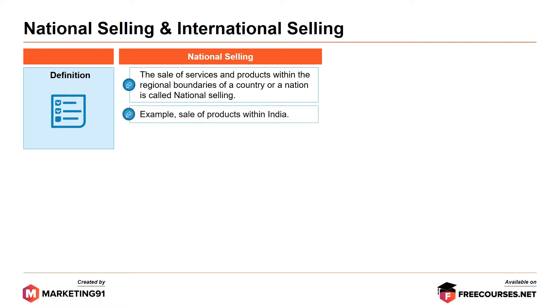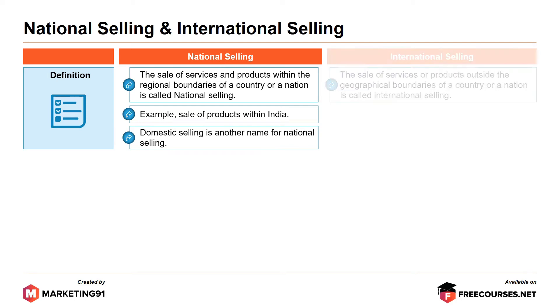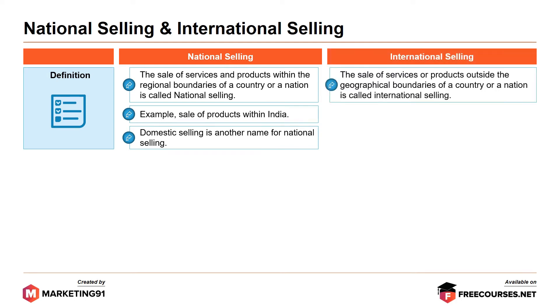For example, the sale of products within India. Domestic selling is another name for national selling. On the other hand, international selling is the sale of services or products outside the geographical boundaries of a country or nation. It caters to the global market.